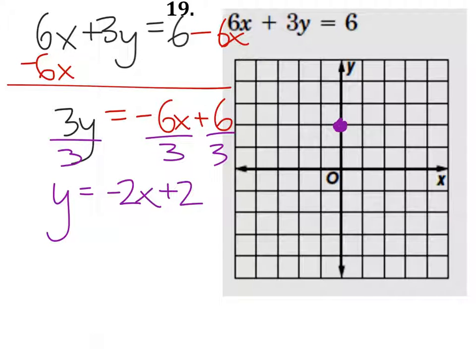Not only that, but we know the slope is negative 2, or negative 2 over 1. So my rise is negative 2, my run is 1.